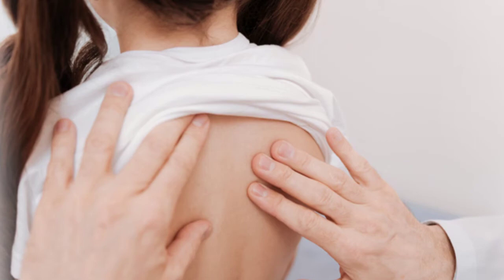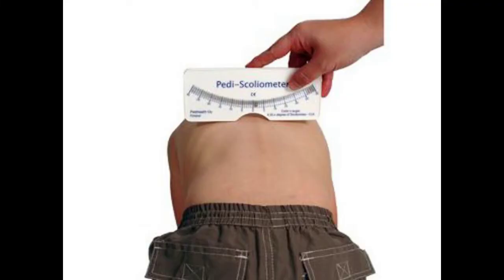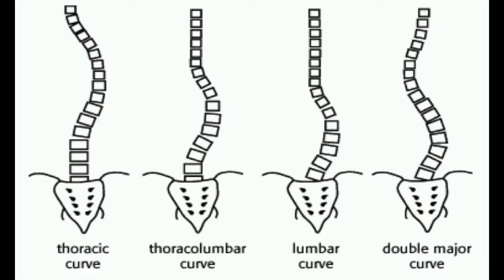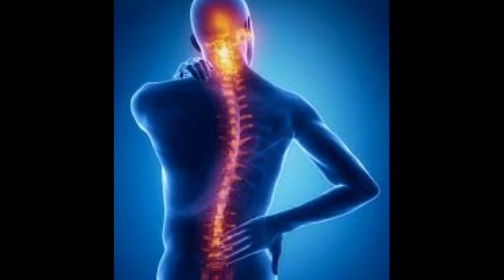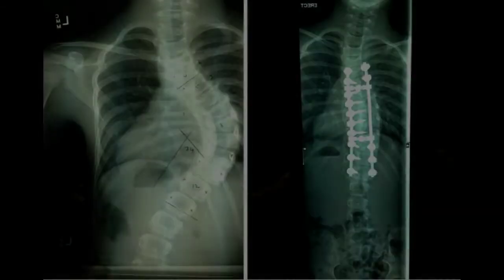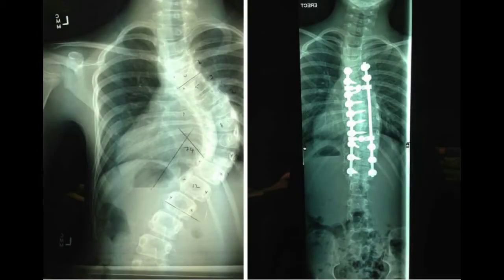However, 60% of curvatures in rapidly growing pre-pubertal children will progress; therefore, scoliosis screening is done in schools across America and several other countries. This screening is probably not necessary until the fifth grade, and beyond that point boys and girls should be examined every six to nine months. Generally, curvatures less than 30 degrees will not progress after the child is skeletally mature, at which point scoliosis screening and monitoring can usually be stopped. With greater curvatures, progression may continue at about one degree per year in adults.